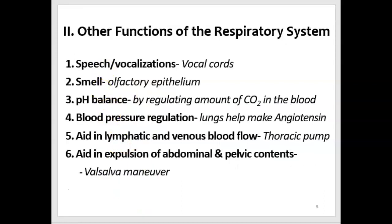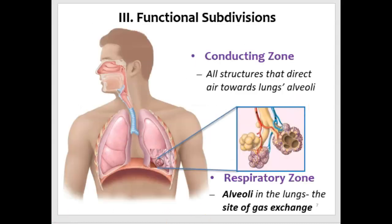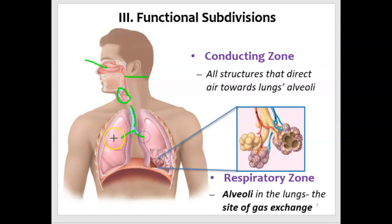We'll talk about these other functions as we proceed from superior to inferior in our study of the organs and tissues of the respiratory system. Now moving to the third subtopic: functional subdivisions. There are functional subdivisions of respiratory organs and anatomical subdivisions. The two functional subdivisions are the conducting zone and the respiratory zone.